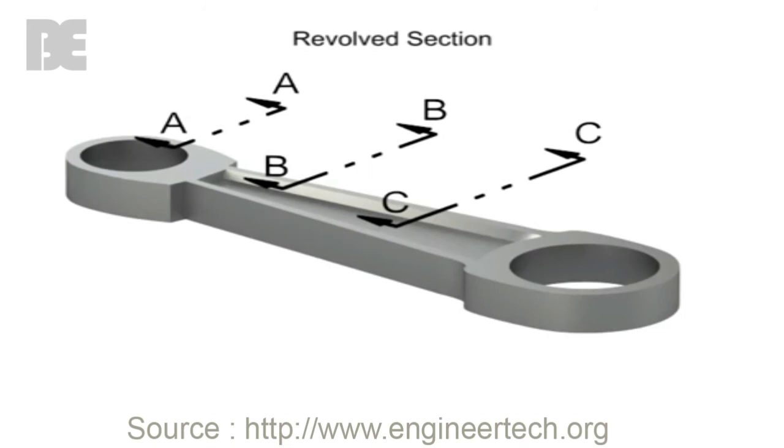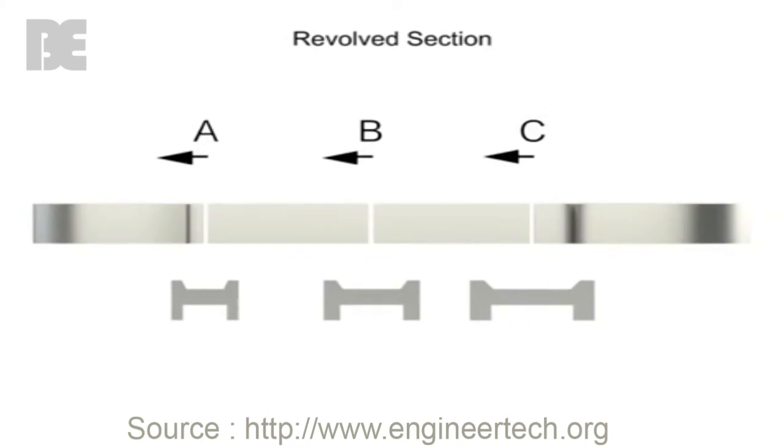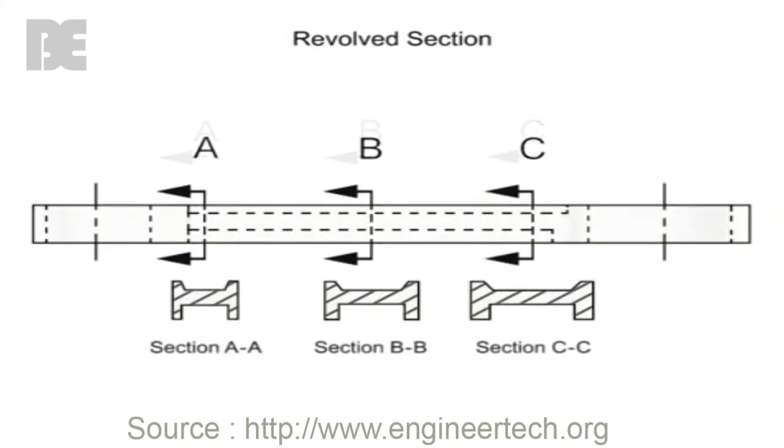Removed sections are actually revolved sections that are moved to another location on the drawing. Removed sections are used when a part such as this connecting rod changes in cross section from one point to another.